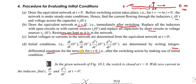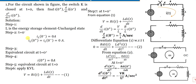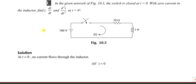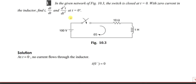Let us solve the first problem. In general, we will write the values later. Here, instead of general R and L, R value is given as 10 ohm and L value is 1 henry. This is a very important problem — if you understand the first problem, you can solve any problem. In the given network, the switch is closed at t = 0.